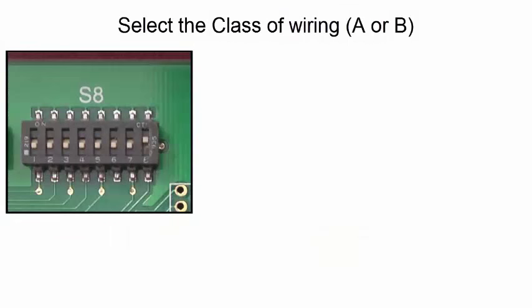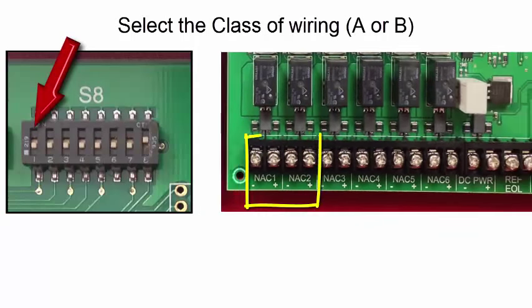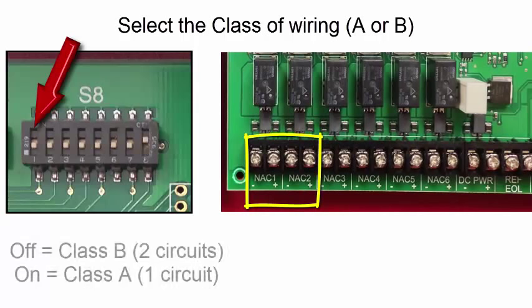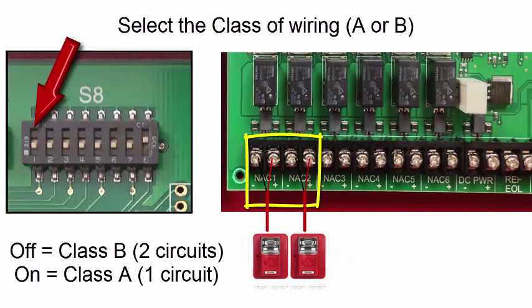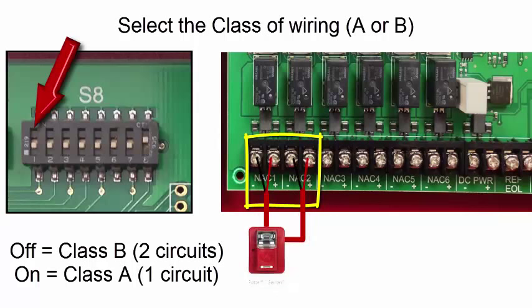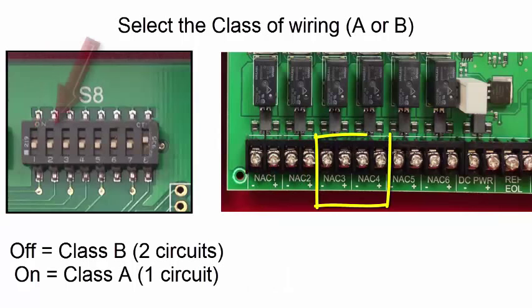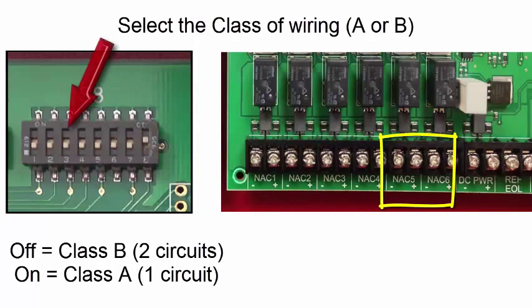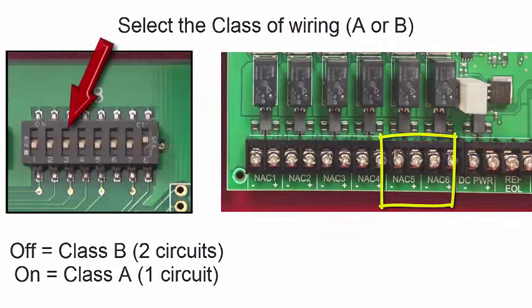Switch 8 also allows the installer to select the class or style of wiring for the NAC outputs. For example, DIP switch 1 of switch 8 sets the class or style of wiring for NAC 1 and 2. In the off position, NAC 1 and 2 will be class B. In the on position, it will be one class A circuit as seen here. DIP switch 2 of switch 8 sets the style of wiring for NAC 3 and 4. DIP switch 3 sets the style of wiring for NAC 5 and 6.